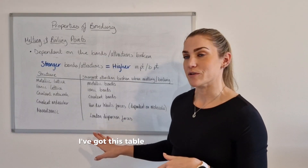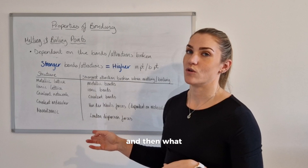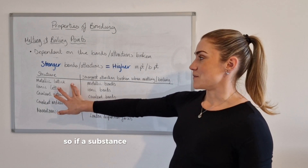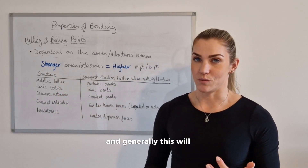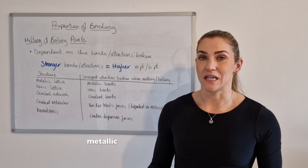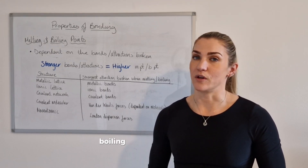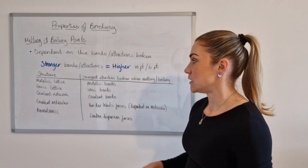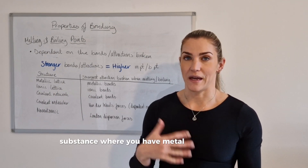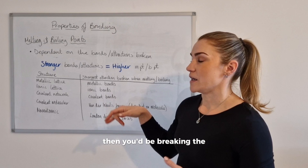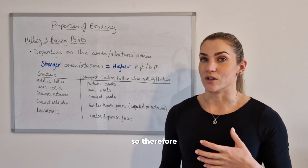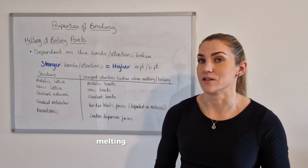To get started, I've got this table here that summarises all the structures and what is the strongest attraction broken when a substance melts or boils. If a substance has a metallic lattice structure — generally if it's a metallic element — then you're breaking the metallic bonds; that's the only thing there to be broken. Metallic bonds are relatively strong, which means the melting and boiling points of metals tend to be relatively high. Similarly, if you're breaking an ionic lattice structure — an ionic substance with a metal and a non-metal bonded together — you're breaking ionic bonds, which are also relatively strong, so ionic substances tend to have high melting and boiling points too.